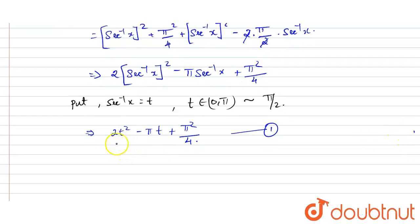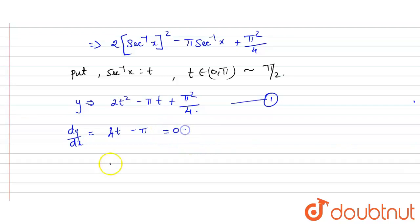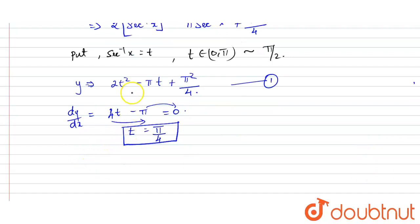Differentiating with respect to t: dy/dt = 4t − π. Setting dy/dt = 0 gives 4t = π, therefore t = π/4. I will now substitute this value back into equation number one.